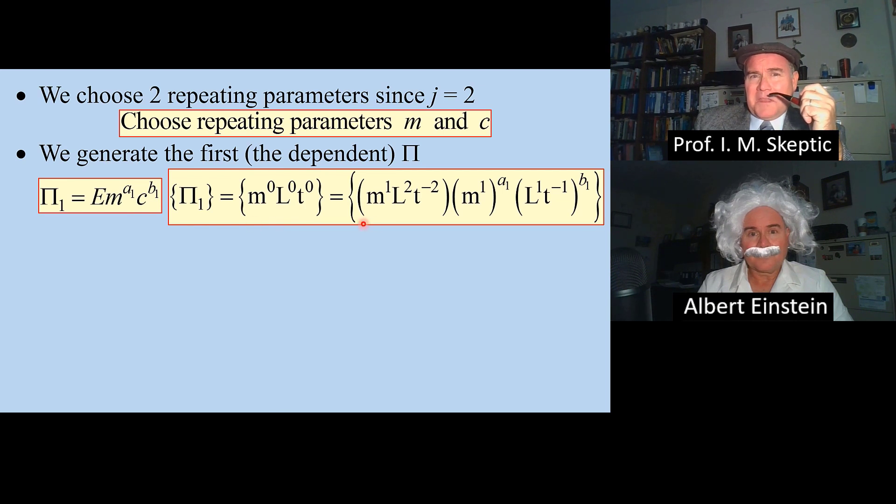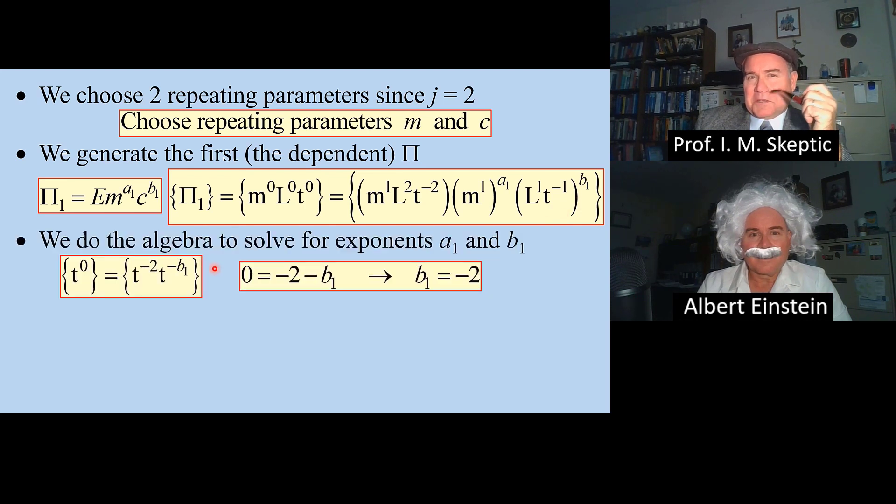The pi itself has to be non-dimensional, and these are the primary dimensions of e, m to its exponent, and c to its exponent. The algebra is trivial to solve for these exponents.